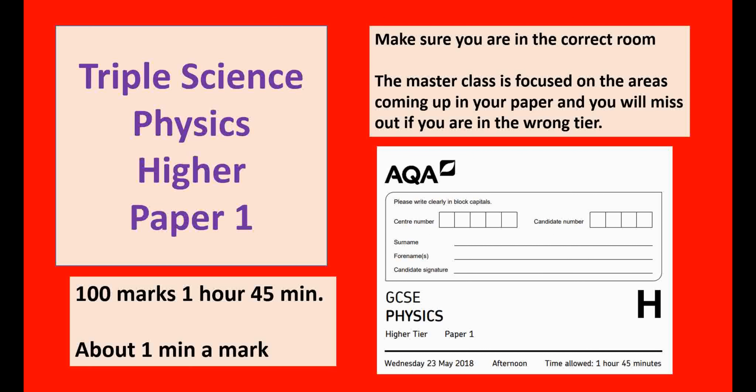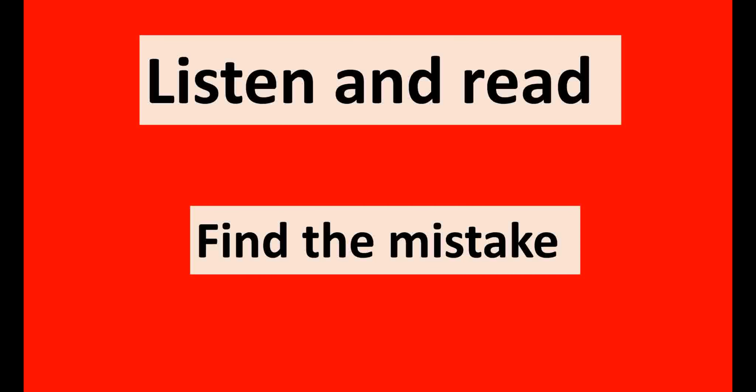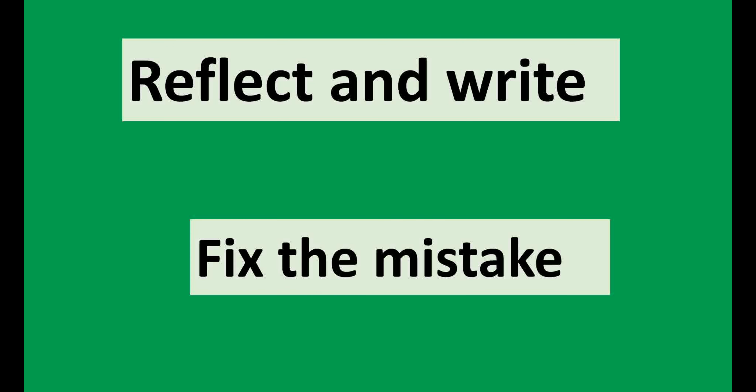The only thing you'll need for this is a piece of paper or a whiteboard and something to write on. We're going to split this into two different types of slides. Some slides are read — you're listening, you're quiet, you're reading, and a lot of the time you're going to be finding mistakes. Other slides are green — that's when you're reflecting, you're writing, and you're fixing those mistakes.